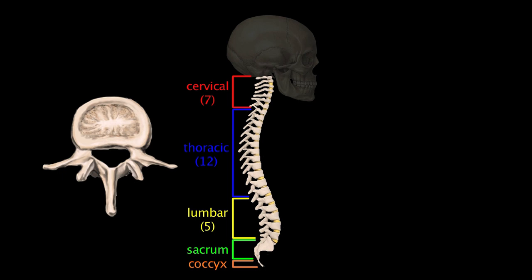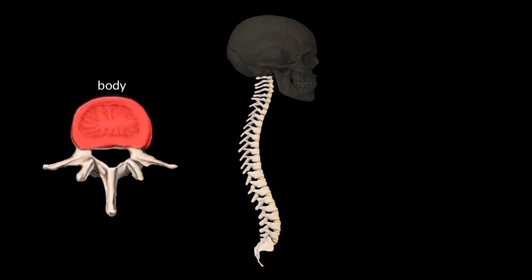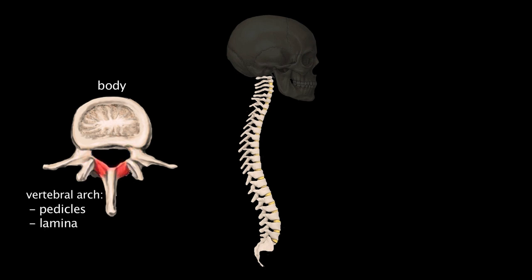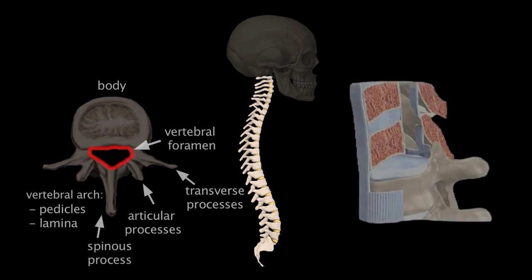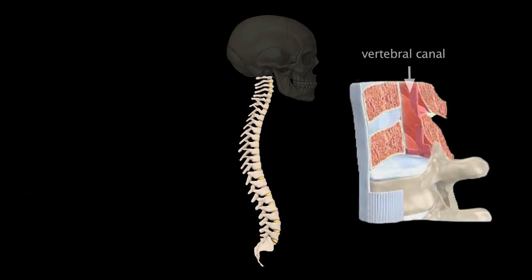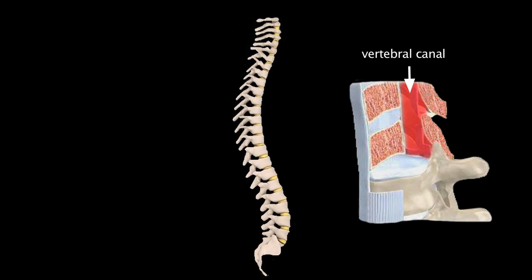Vertebrae normally vary in size and other characteristics from one region to another, but their basic structure is the same. A typical vertebra consists of a vertebral body and a vertebral arch. The arch is composed of pedicles and a lamina, and projecting off the arch are seven processes: two transverse processes, one spinous process, and four articular processes. The vertebral body and arch form an opening called the vertebral foramen, and these successive foramina stacked on top of each other form the vertebral canal through which the spinal cord travels.